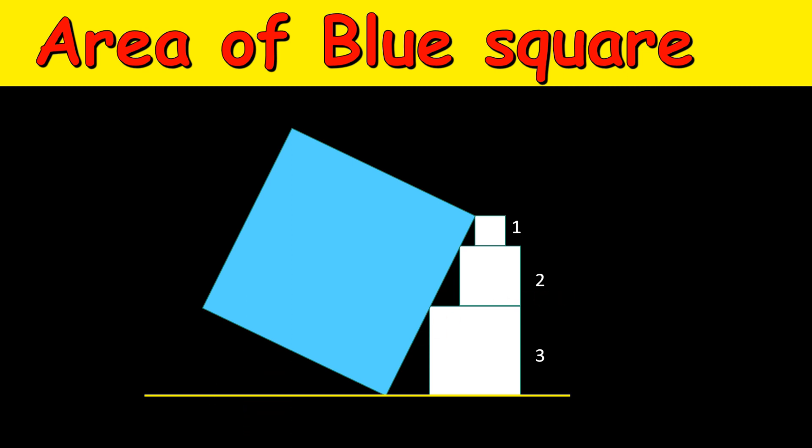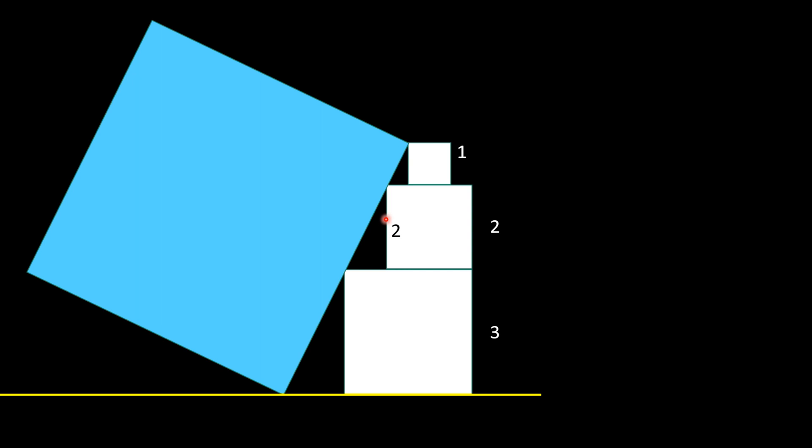And now focus on the right part of this image. So now this side will be of length 2 because each side is of length 2, and the base will be of length 1 because this complete length is 3 and the length from here to here is 2, so this remaining length will be 1.